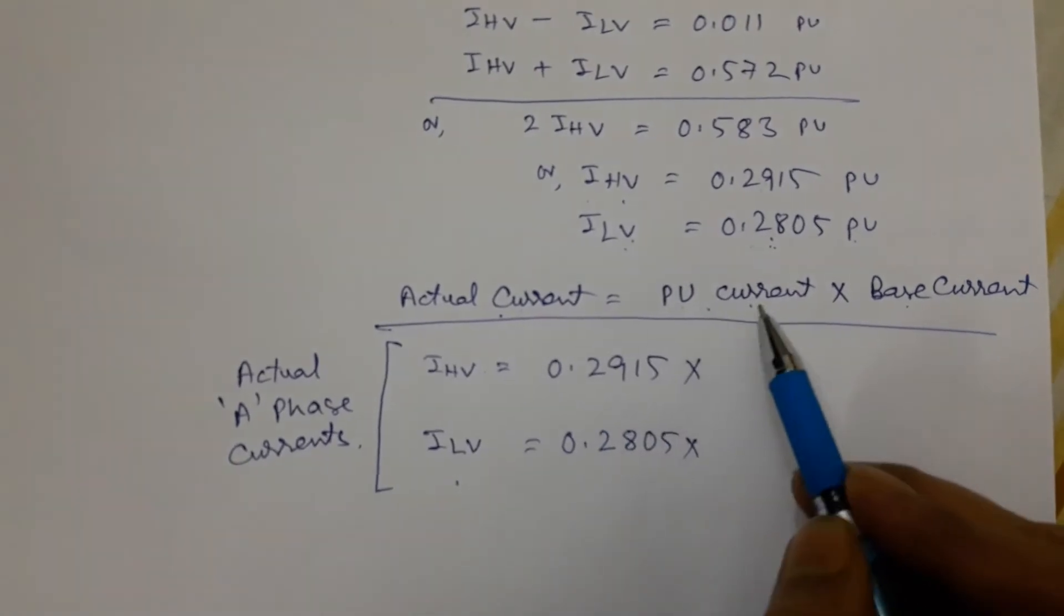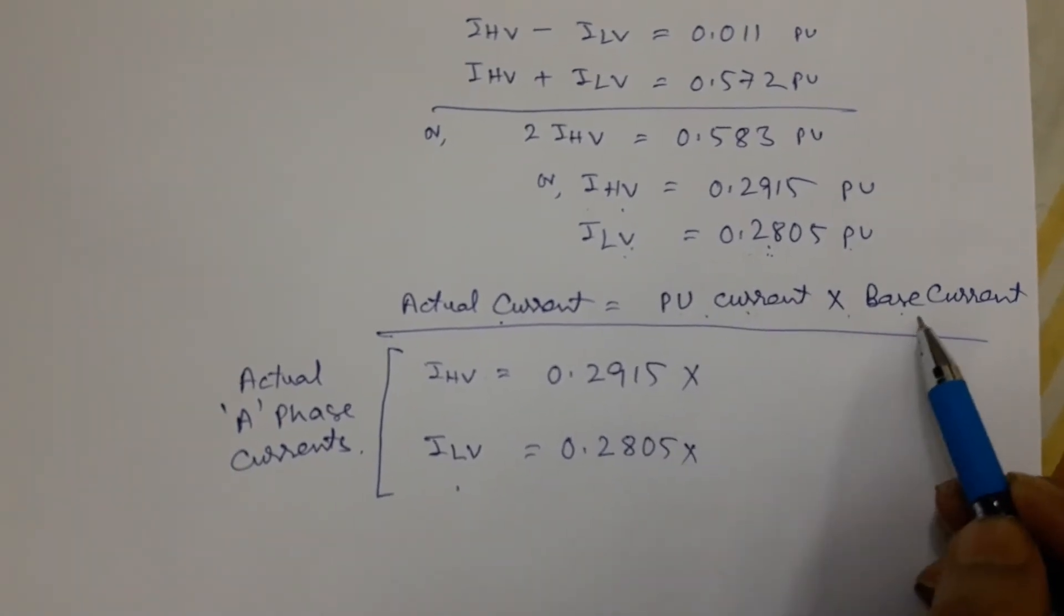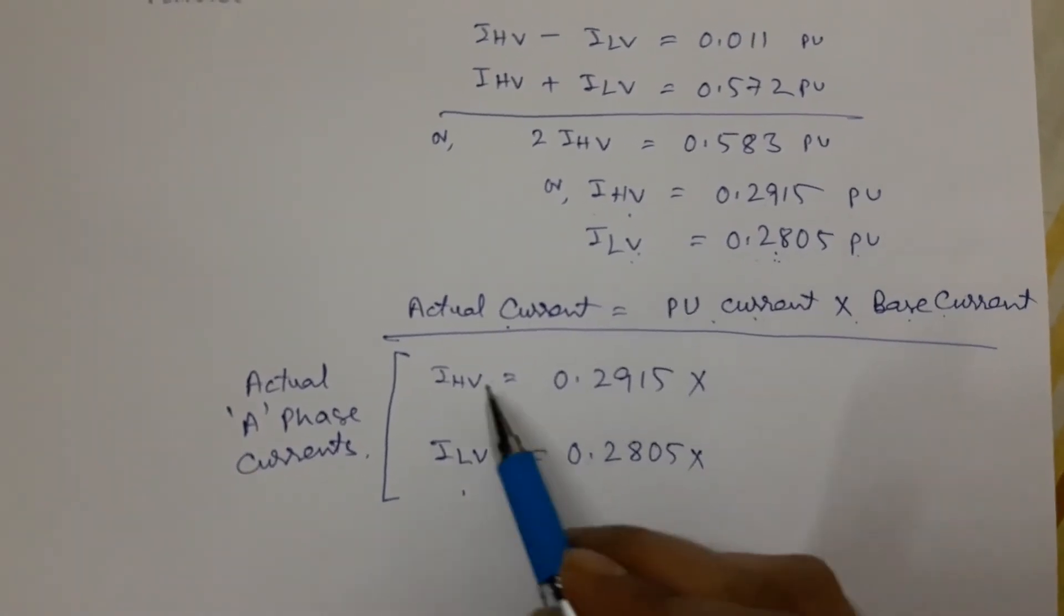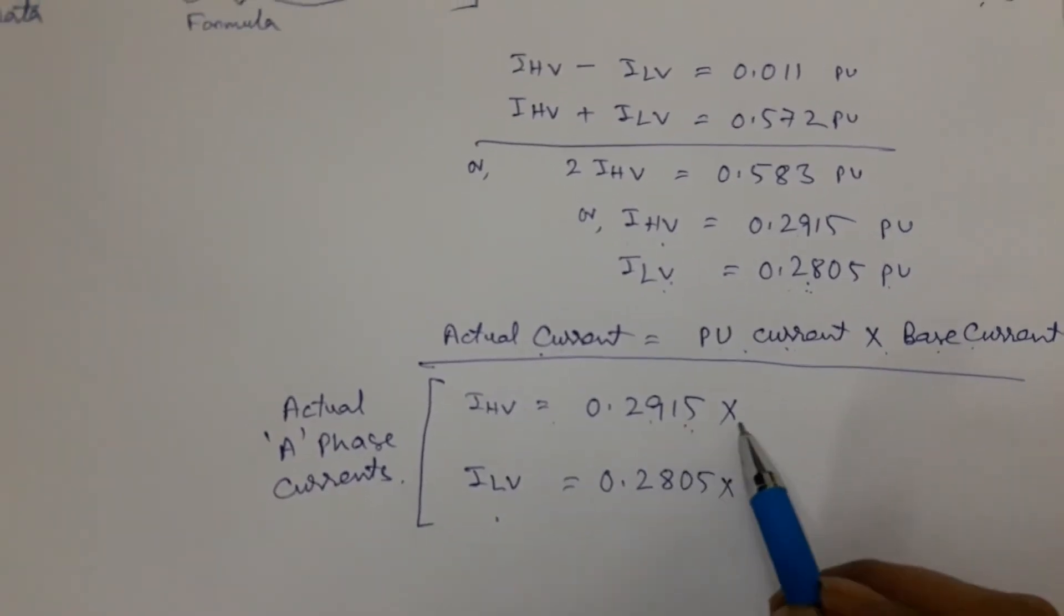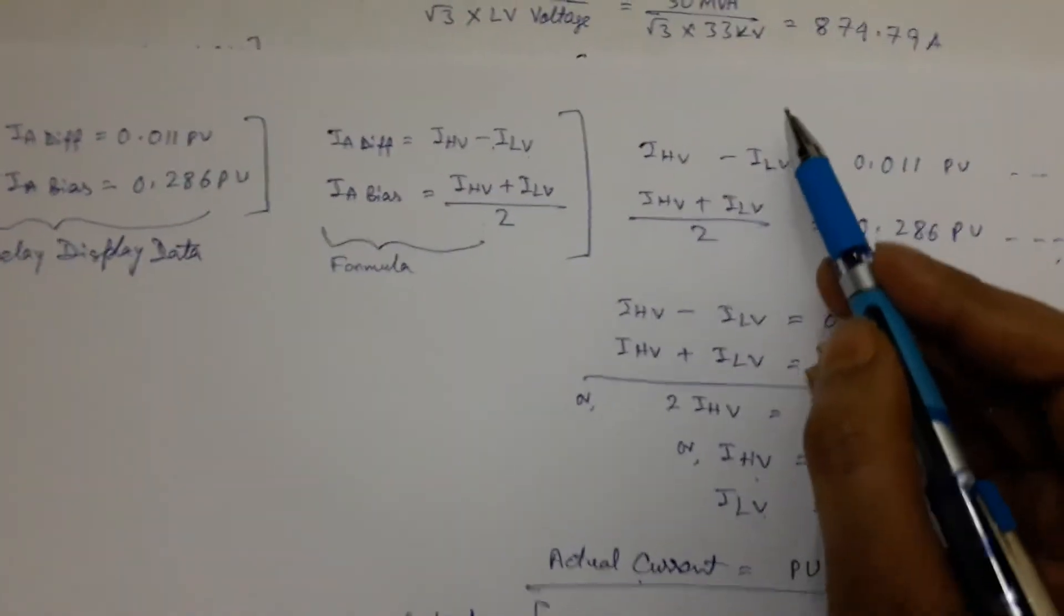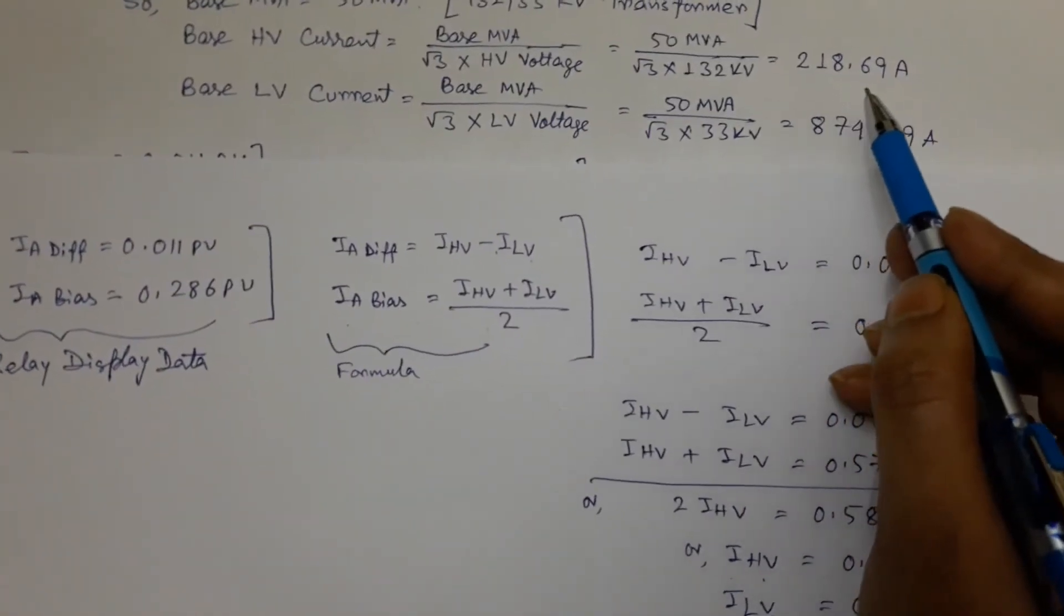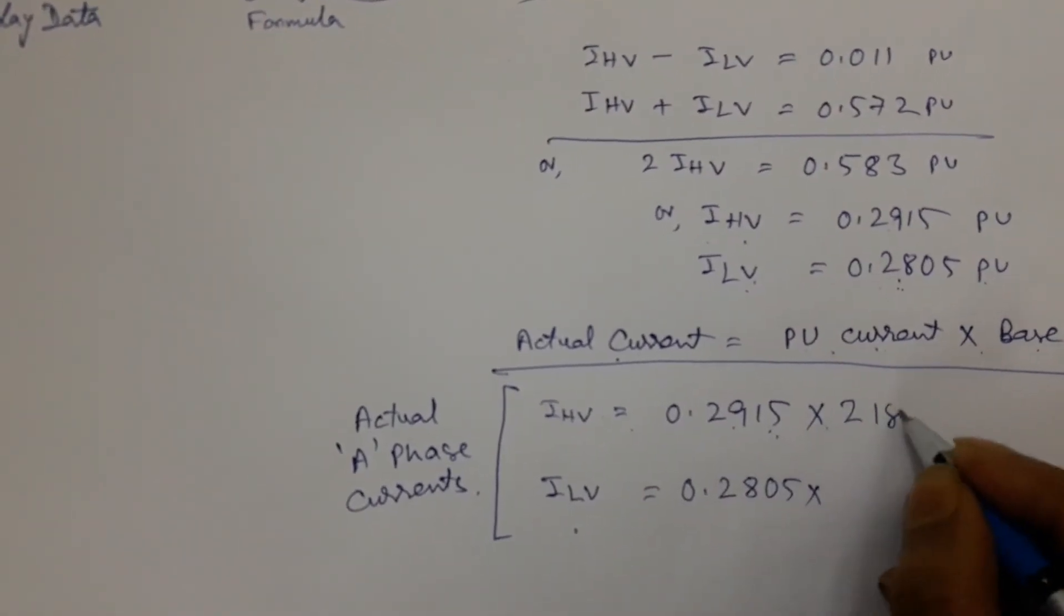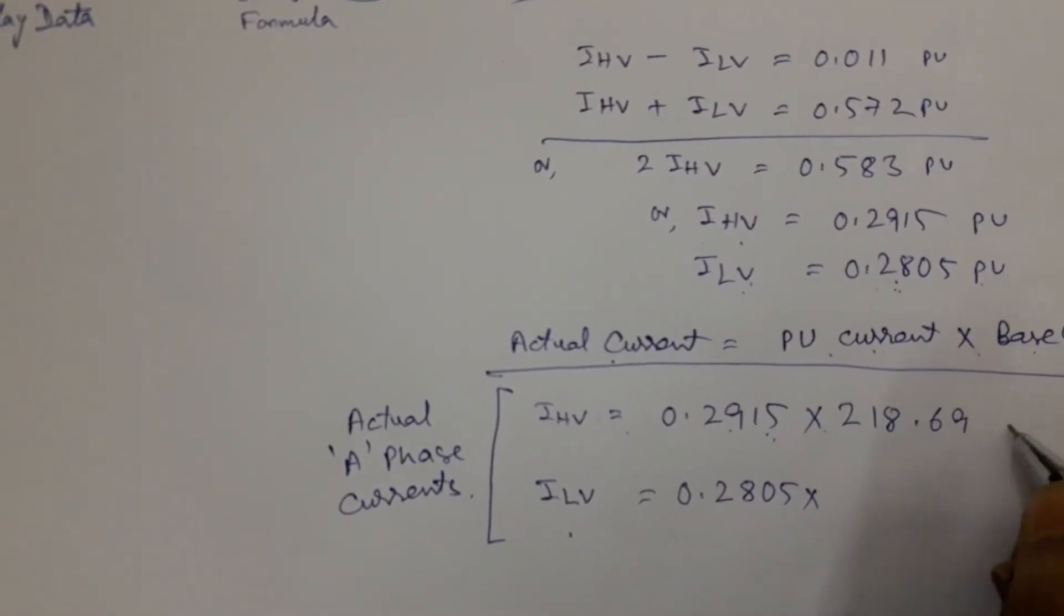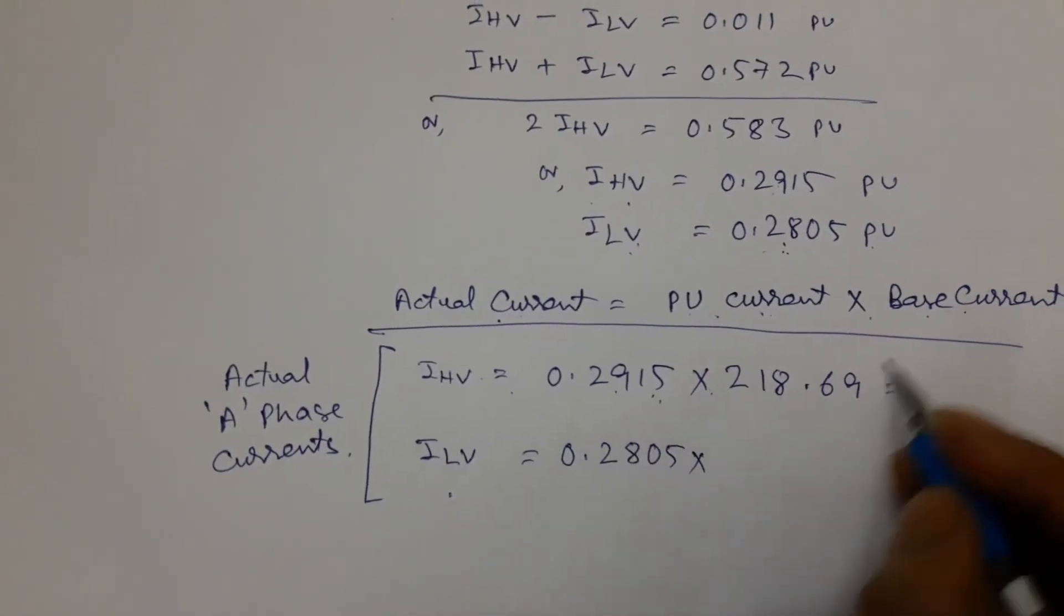Now for HV side per unit current, we already calculated. Base current, that is also we calculated before, that is 218 ampere, so 218.69 ampere. So by multiplying these two, we get the HV side current.